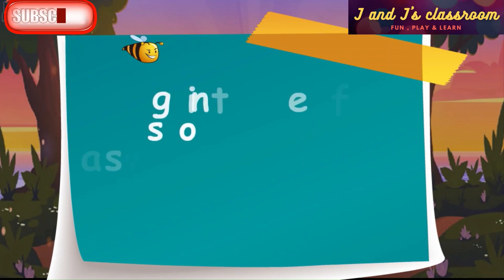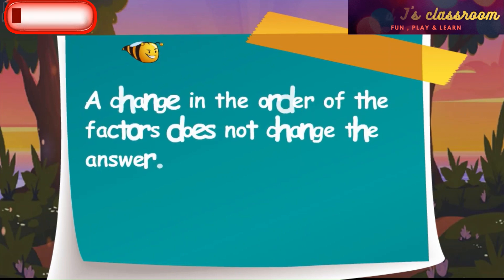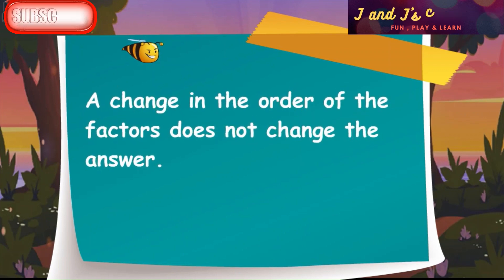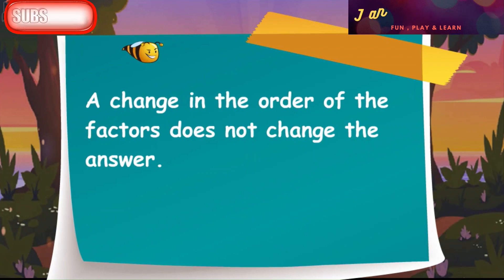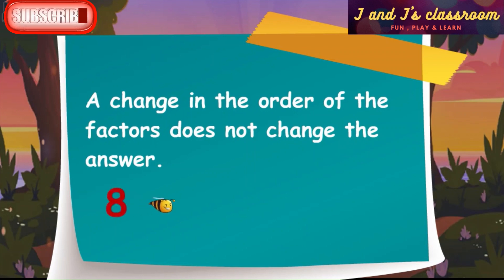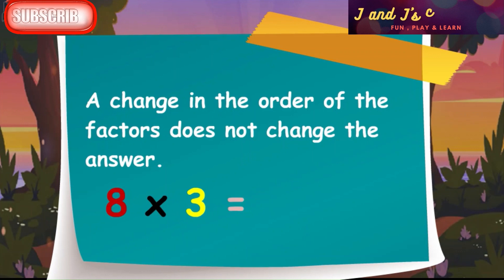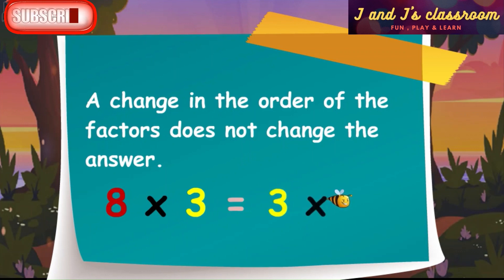Now listen to the last property: a change in order of the factors doesn't change the answer. For example, 8 cross 3 is equal to 3 cross 8.